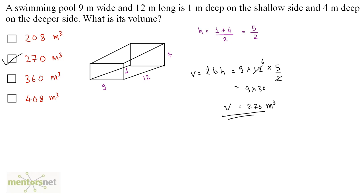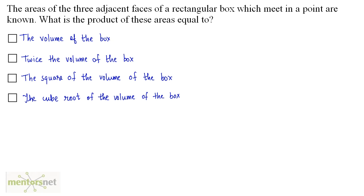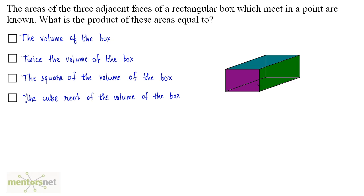Option B. The areas of the three adjacent faces of a rectangular box which meet in a point are known. What is the product of these areas equal to? We have these three faces colored with different colors meeting at this point. Let their areas be A1, A2 and A3. We have been asked what is A1 times A2 times A3.